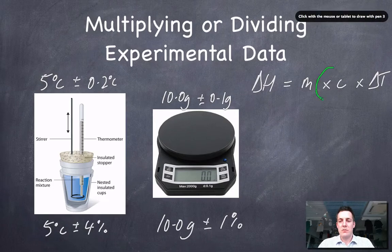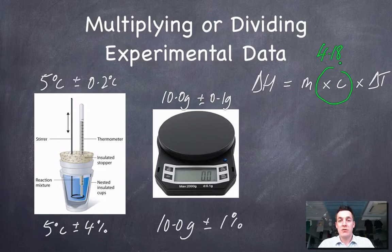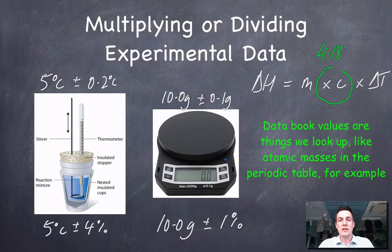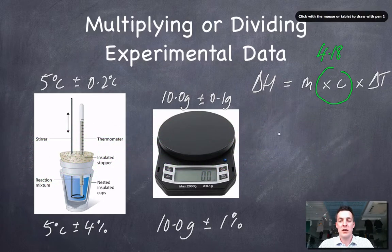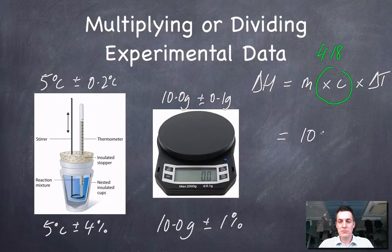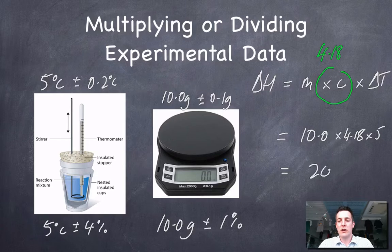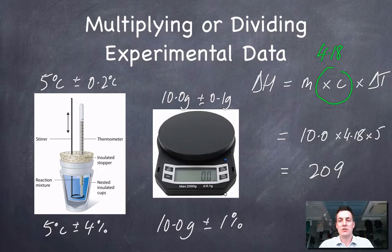The specific heat capacity is 4.18 joules per kelvin per gram. This is a data book value, so we treat it as having no error. Calculating the heat energy change: 10.0 multiplied by 4.18 multiplied by 5 gives 209 joules. Since I multiplied two values that had errors, I add their relative errors together — not their absolute errors — giving a final answer of 209 joules plus or minus 5%.